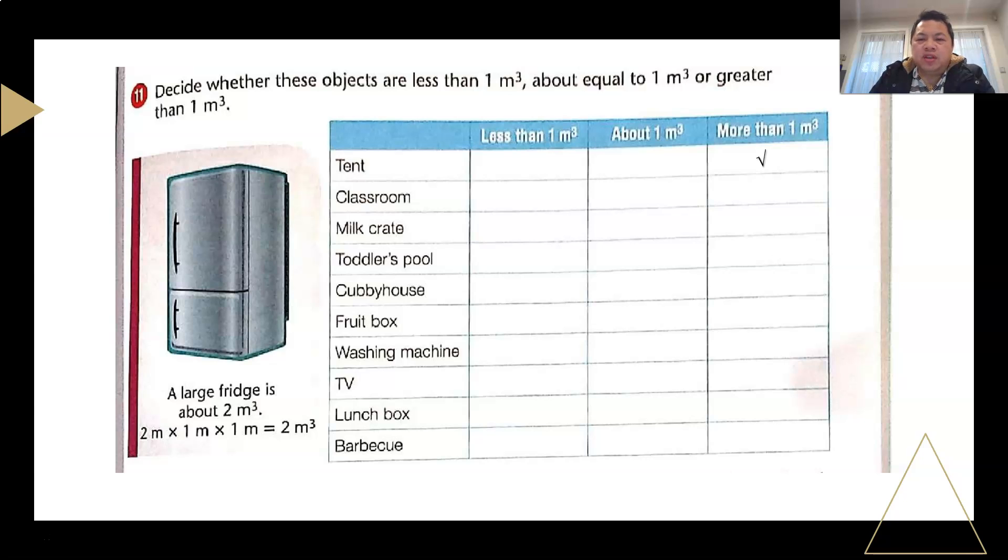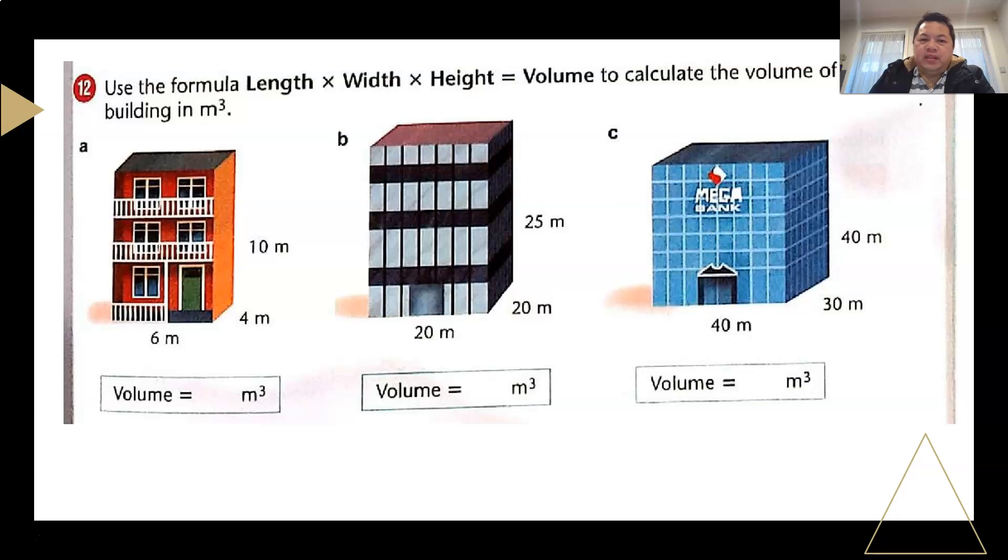So tent is usually more than one meter cube because you need a few people staying in there. Classroom will be more than that, milk crate will be less than that. A toddler's pool should be less than one meter cube because you don't want the toddler to drown inside. A cubby house should be more than one meter cube, a food box is less than one meter cube, washing machine is about one meter cube, TV should be less than one meter cube, lunch box is less than one meter cube, and barbecue is about one meter cube.